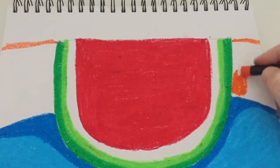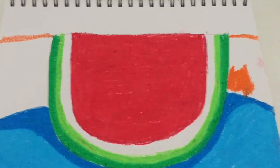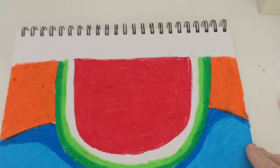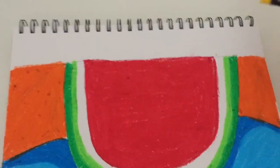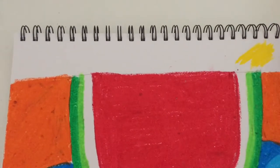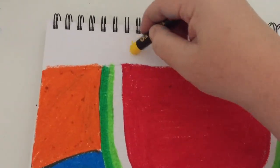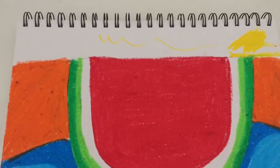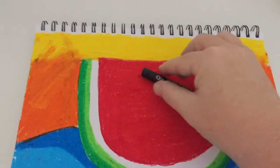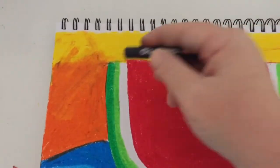Then the top part I'm going to do in yellow, all across the top there. A nice vibrant yellow. I can also smudge between the orange and the yellow for a little bit of blending. Then I'm going to use the black and carefully trace with the black pastel.